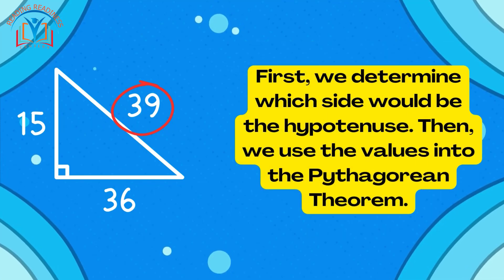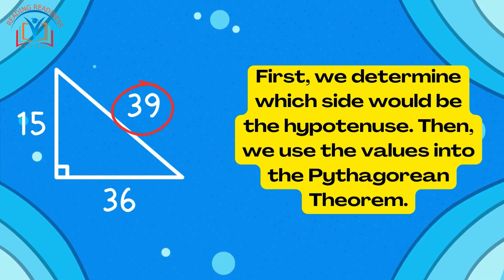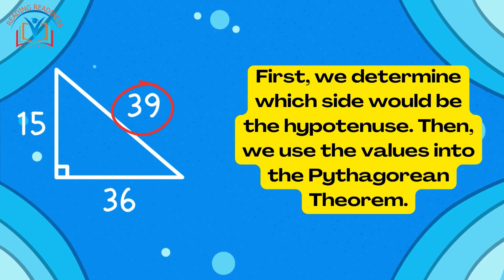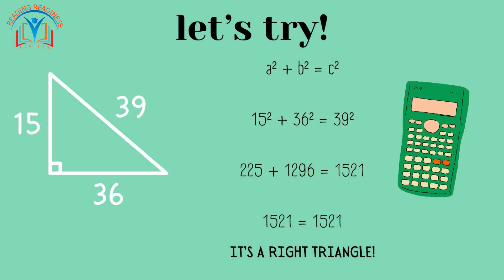First, we determine which side would be the hypotenuse. Then, we use the values into the Pythagorean Theorem. Let's put this principle to the test with yet another example. Suppose we are presented with side lengths of 15 units and 36 units. Applying the Pythagorean Theorem, we uncover that the longest side measures 39 units, confirming our triangle's rightful place in the realm of right triangles.